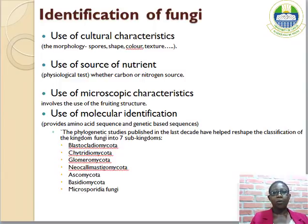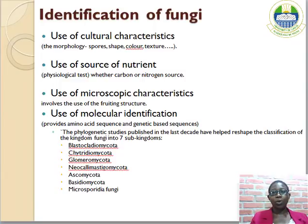How do you identify a fungus? A fungus can be identified in four basic ways. You can use the cultural characteristics — this has to do with the morphology, the shape of the fungus in whatever substrate it is growing on, the texture, and the color. You can use the source of nutrients: fungi are either carbon-loving or nitrogen-loving. The carbon-loving are usually fast-growing fungi, while the nitrogen-loving are slow-growing fungi that take weeks or months to reach maturity.